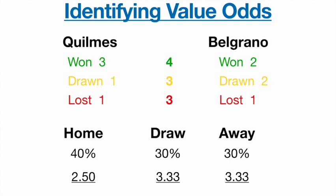Based on this, the home team should be favorites. If we want to back the home team, we don't want to see odds below around 2.50 — if the bookmaker is offering 1.5 or 1.6, we're not getting good value. For the draw and away, if you can get near 4.0 for the draw or 5–6 for the away win, those could offer value. It all depends on what odds are actually available — I won't pull live odds now as they'll be outdated by the time you watch this.